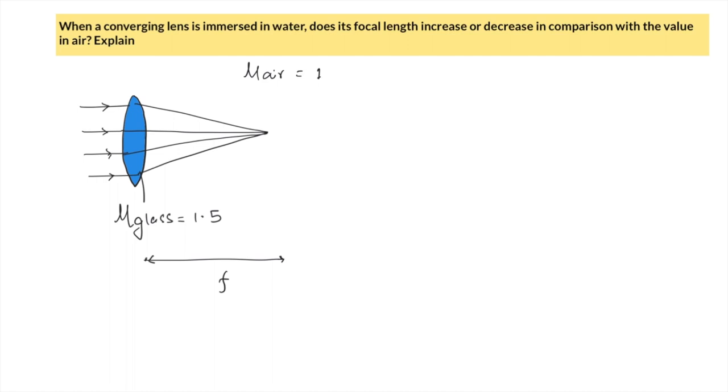At first glance, we can think that since we are going from air to water, the refractive index is increasing because μ for water is 1.33, which is greater than μ for air. So we might think that focal length will decrease, but we have to think about what is happening to the converging power of the lens.